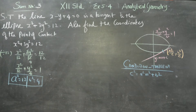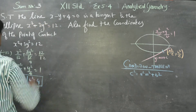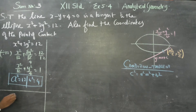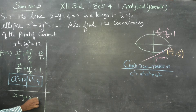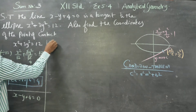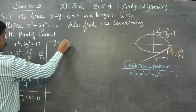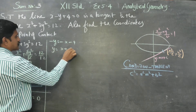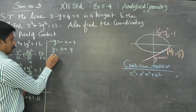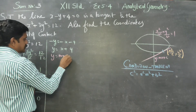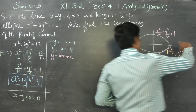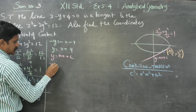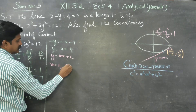Coming to the equation of the straight line: x - y + 4 = 0. Rearranging, -y = -x - 4, so y = x + 4. Matching this with y = mx + c, comparing the coefficient of x, m = 1 and c = 4.